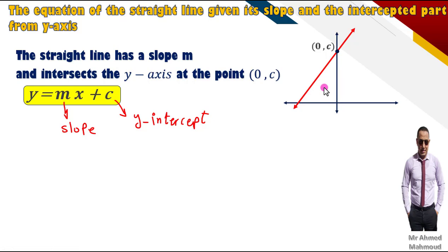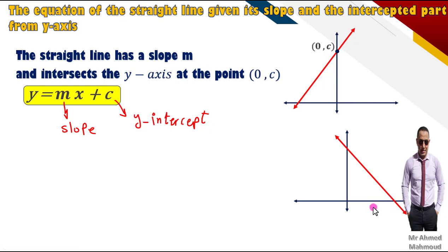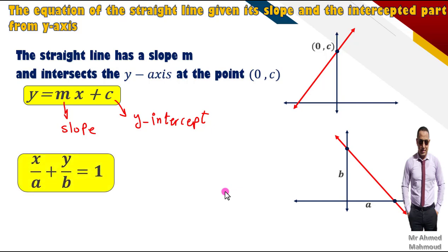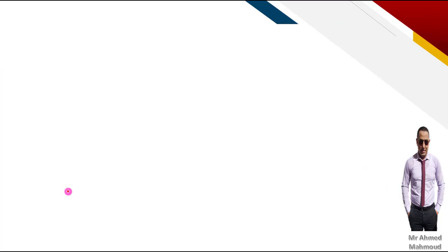هناخد special case أخيرة. لو أحنا عندنا straight line تقطع الـ axes في تو بوينتز: الـ x-intercept هنسميه a والـ y-intercept هنسميه b. فهنا هتكون الـ equation of the straight line: x/a + y/b = 1، in which a هو الـ x-intercept والـ b هو الـ y-intercept. ودي آخر special case عندنا في الـ equation of a straight line.